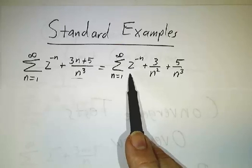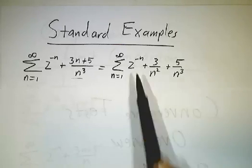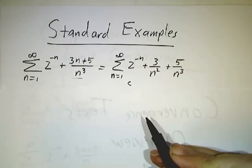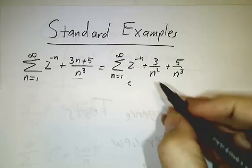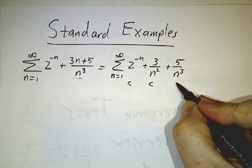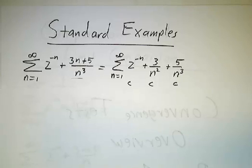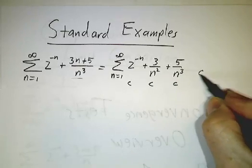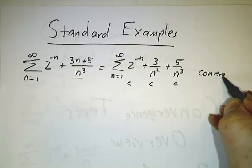oh yeah, that's a geometric series where the common ratio is 1 half, so that converges. 3 over n squared, that's a p-series with p equals 2, that converges. 5 over n cubed, that's a p-series with p equals 3, that converges. Convergent plus convergent plus convergent means the whole thing converges.